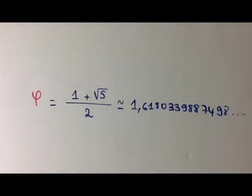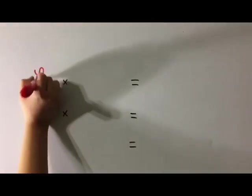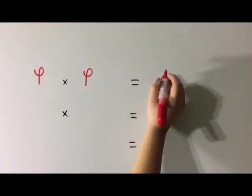The golden ratio has the following property: if we multiply it by itself, the result will be the same as if we added one to it.